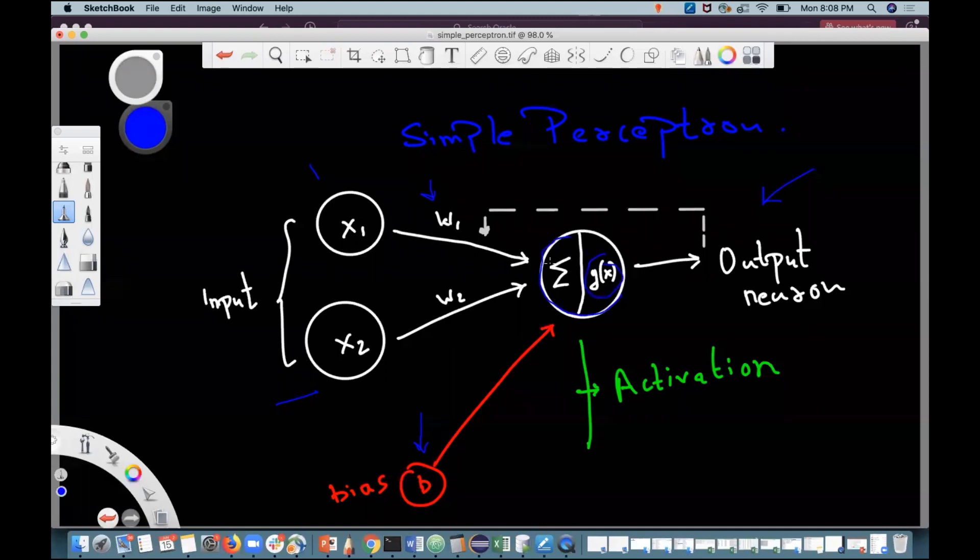First thing is that this input will get multiplied with the weights. So x1 w1, and sigma means a sum, right? Then x2 w2. So it's x1 into w1 plus x2 into w2 plus b.